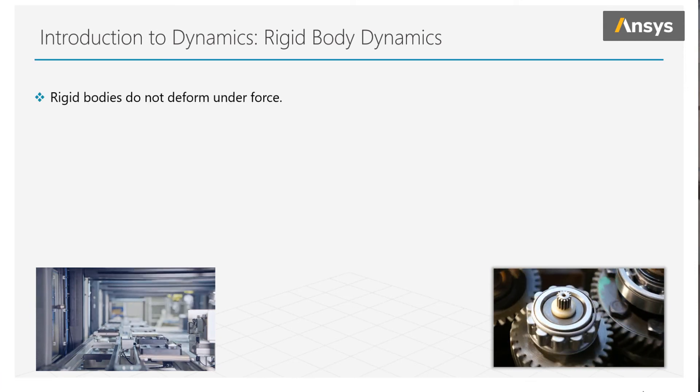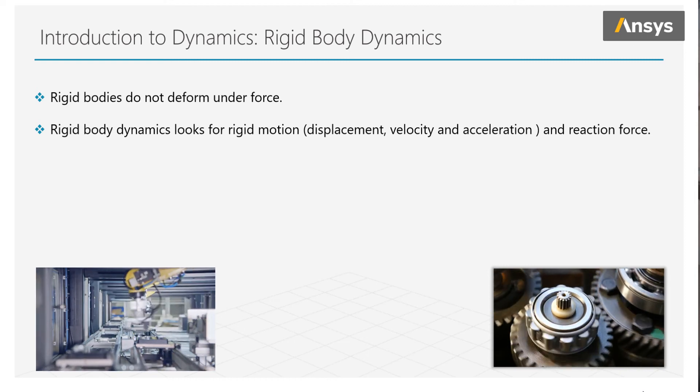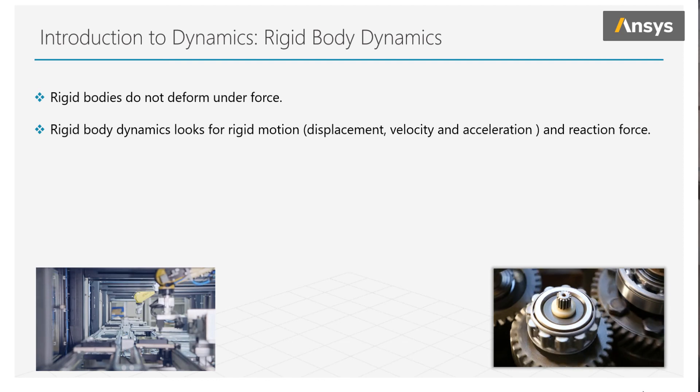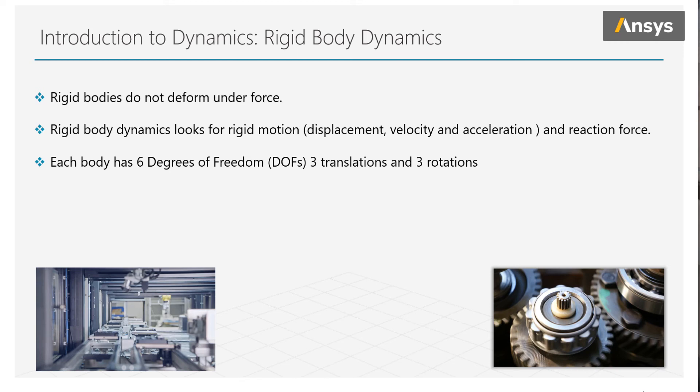So we will instead be looking for quantities such as the position, the motion, the velocity, the acceleration, and even the reaction forces between the parts. And each of these has six degrees of freedom, three translations, and three rotations per body. The bodies are connected through kinematic joints and even contacts in some cases.